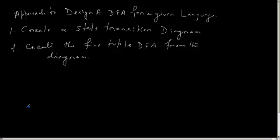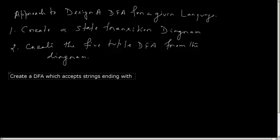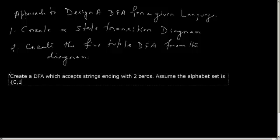We'll see how to solve this in the given question. Let us now try to solve one of the questions that has been asked in the previous year. The question is: create a DFA which accepts strings ending with two zeros. Assume the alphabet set is {0,1}.